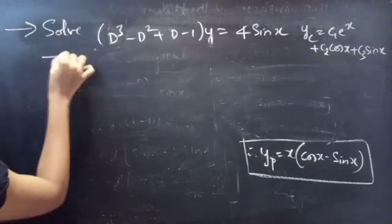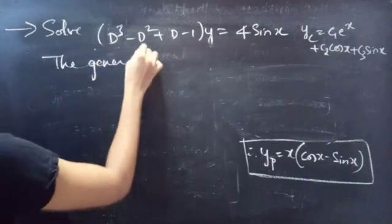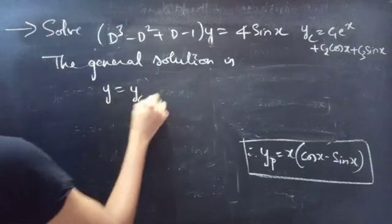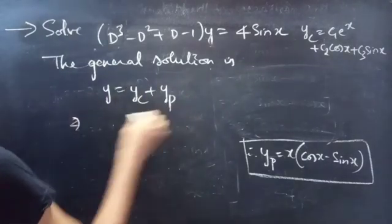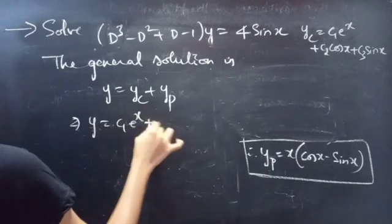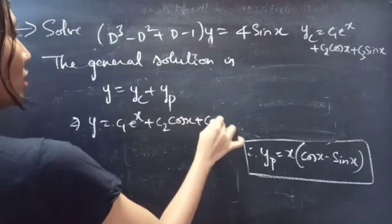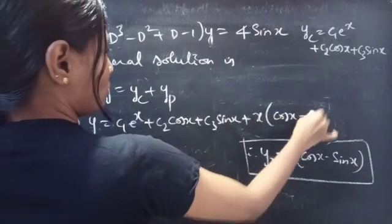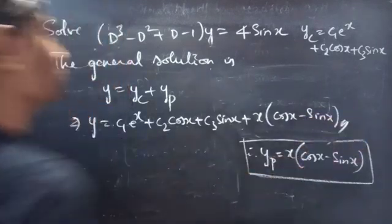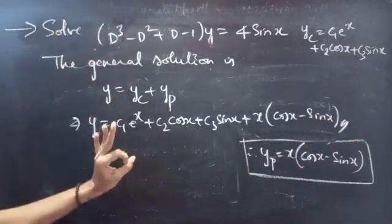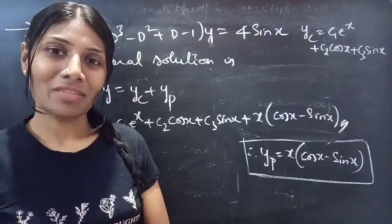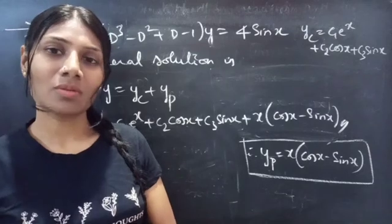Now let's write the general solution y = yc + yp: y = c₁eˣ + c₂ cos x + c₃ sin x + x cos x - x sin x. This is the required solution. Notice the order is 3 and we got exactly 3 constants. We've solved a problem from higher order linear differential equations. Hope you understand — see you in the next video, bye bye.